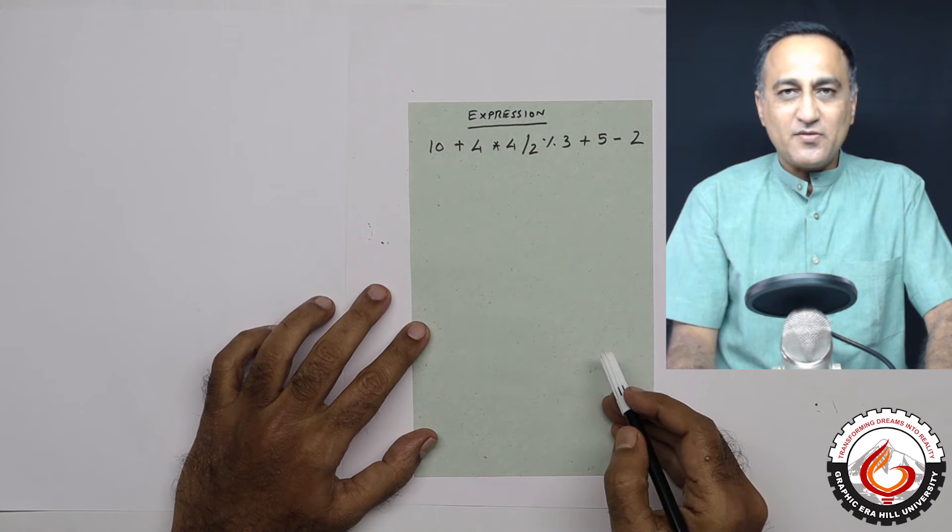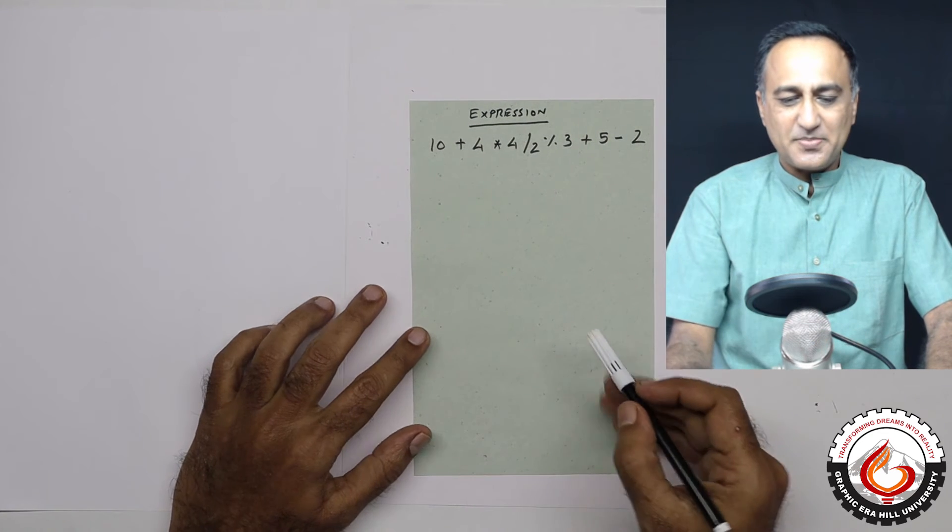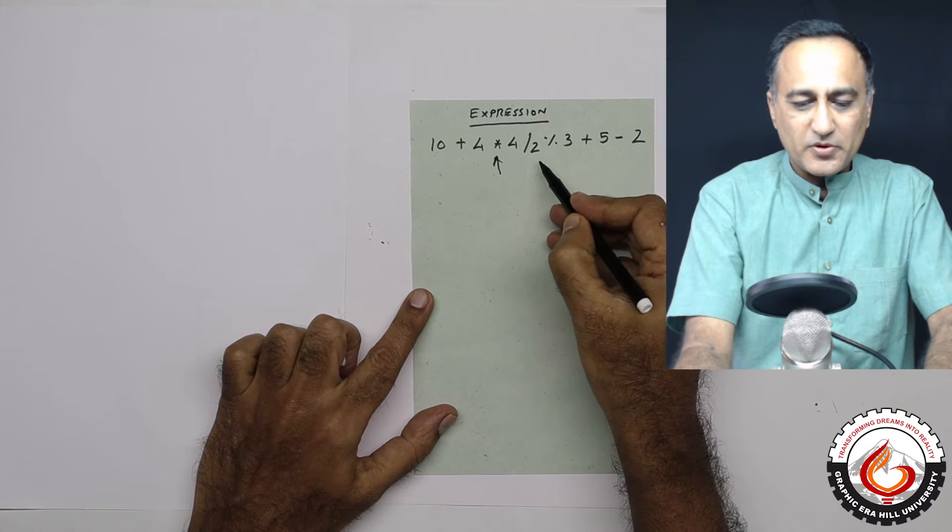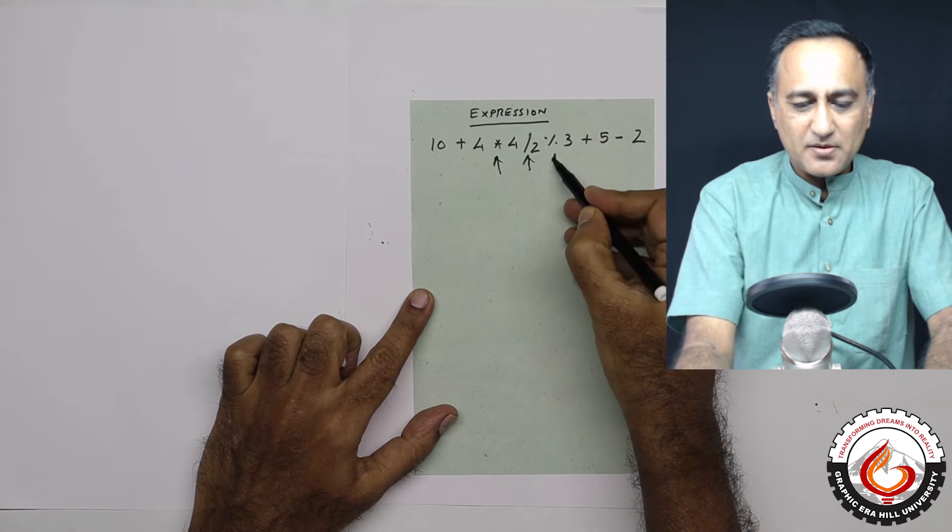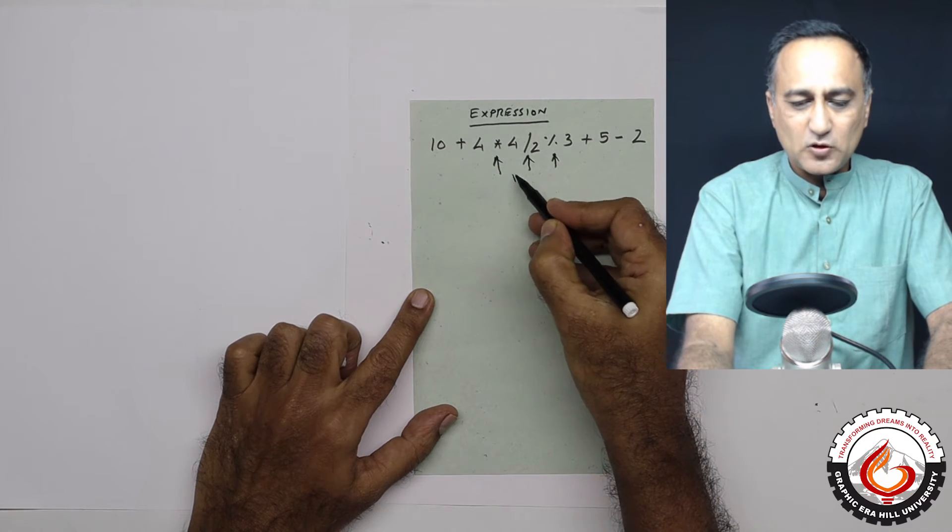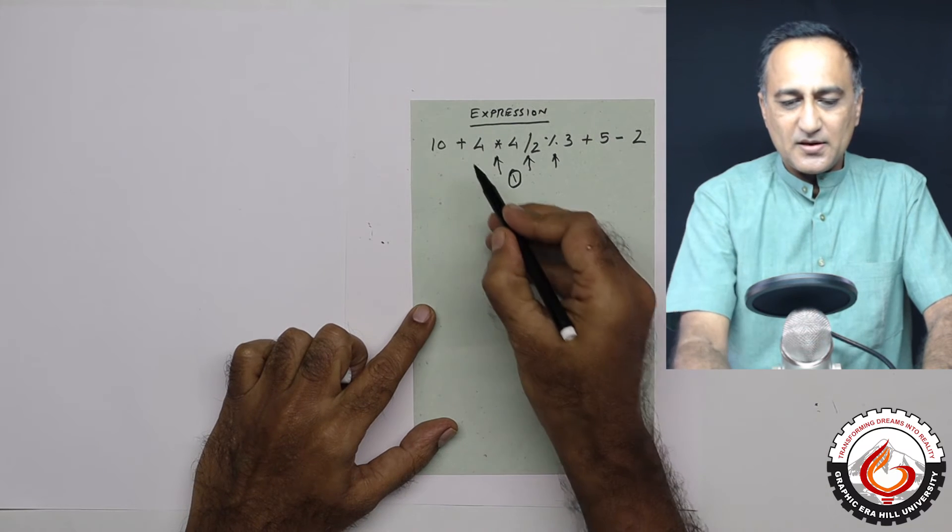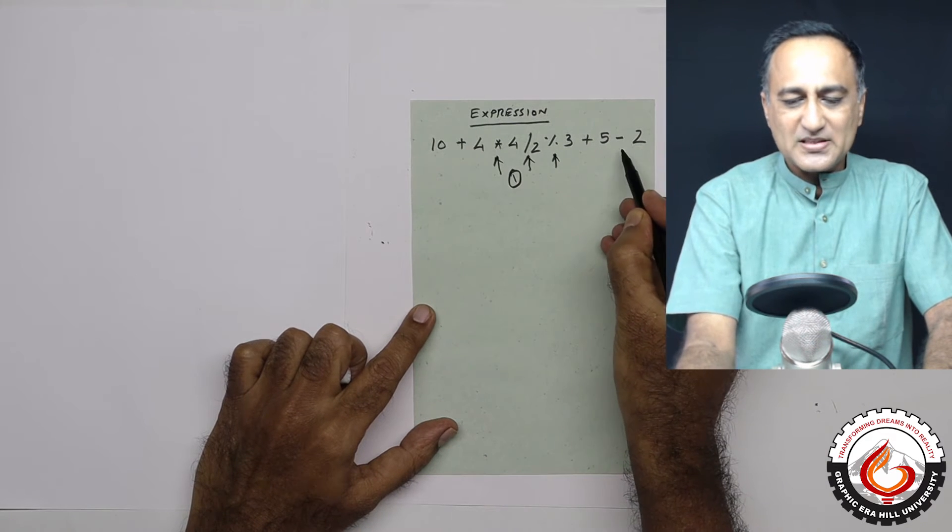So let's first identify which of the operators have the highest precedence. If you look here, the highest precedence is going to be with multiplication, division, and modulus. These are the top operators which are going to have the highest precedence. This is going to be followed by the plus and minus.